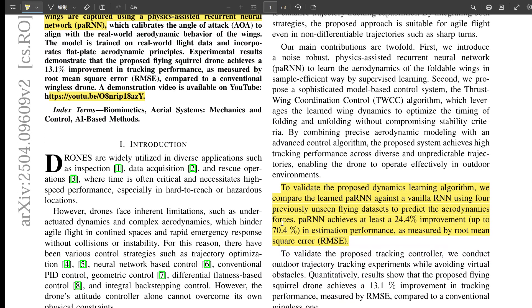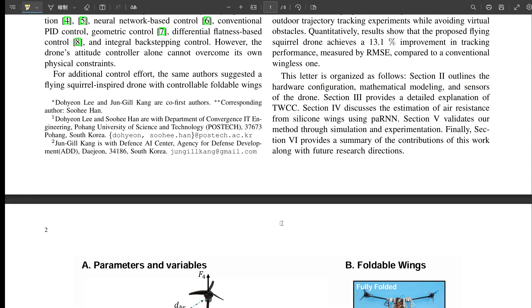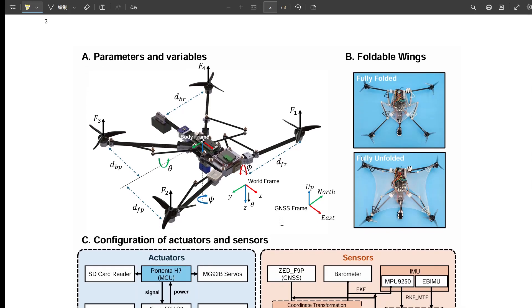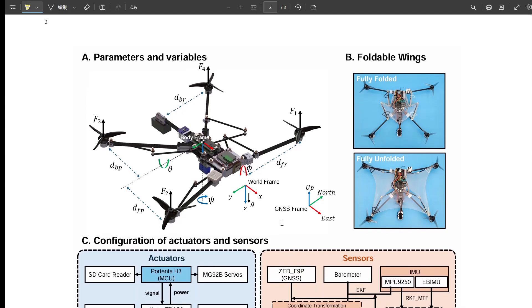So ready to jump in? Let's do it. Maybe start with that biomimicry part. How exactly does the flying squirrel do its thing, and how do they translate that? Good plan. Okay, the flying squirrel. So for those of us like me who haven't closely studied rodent aerodynamics, how does it use its body like a wing? What's the trick?